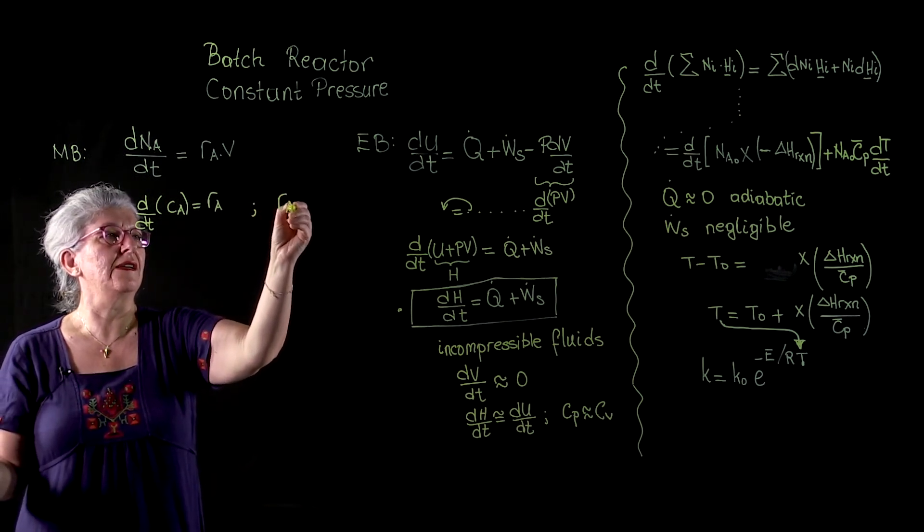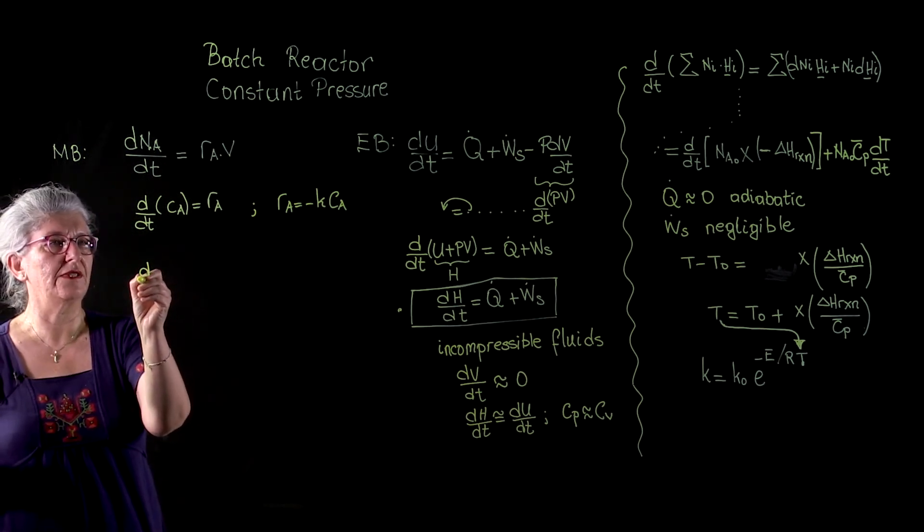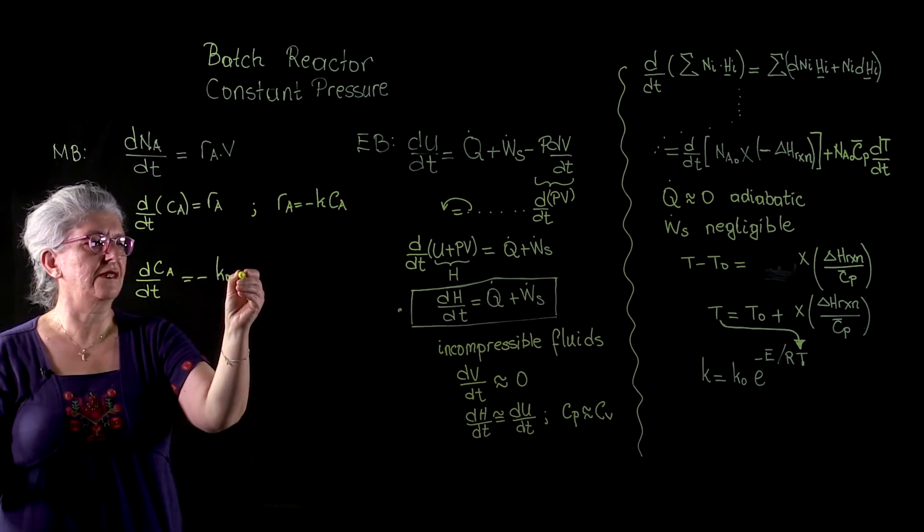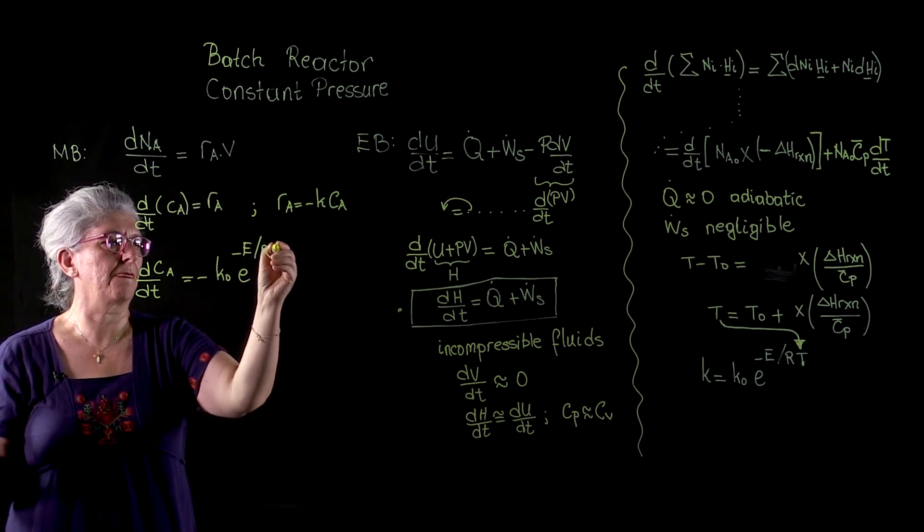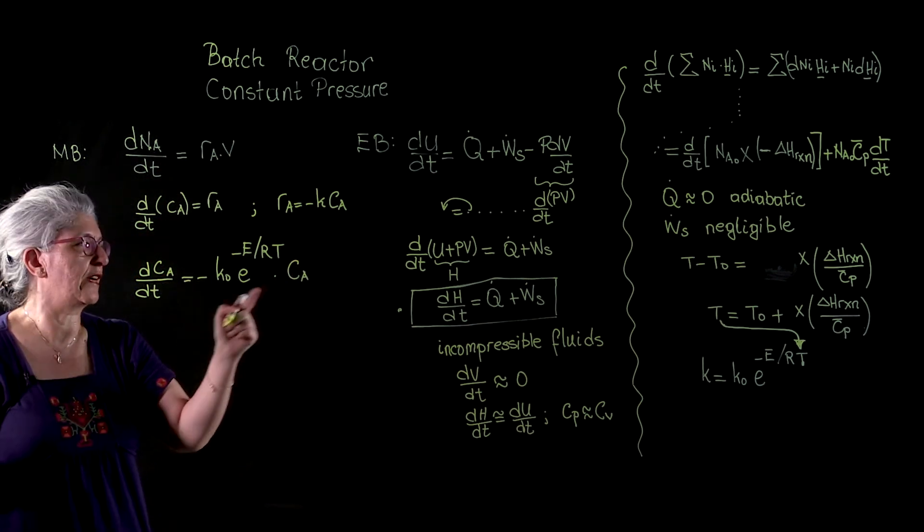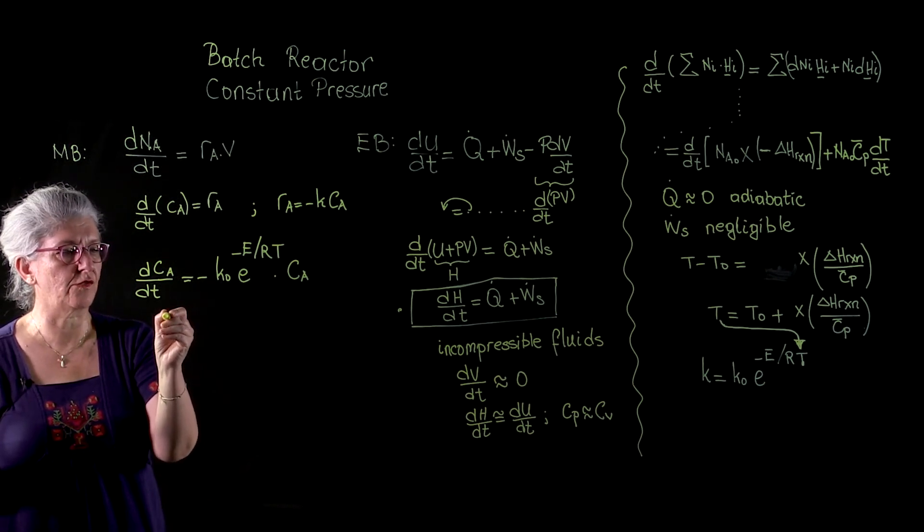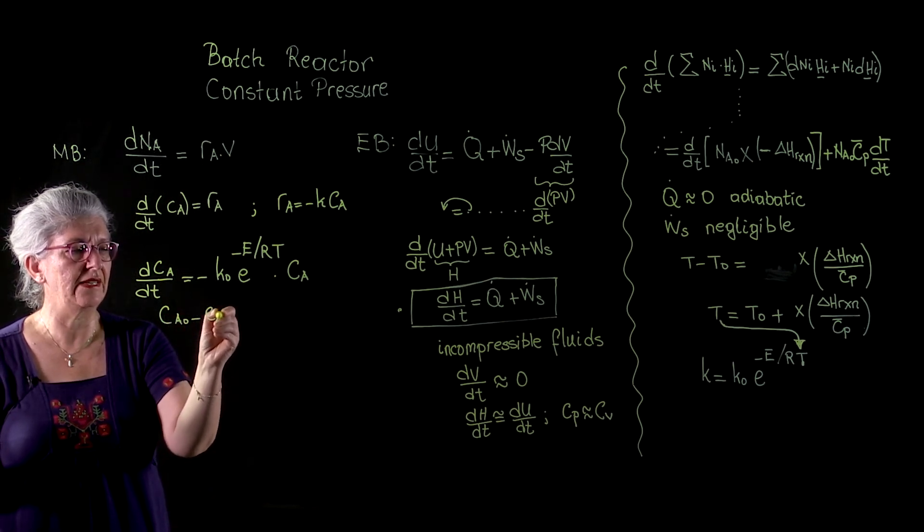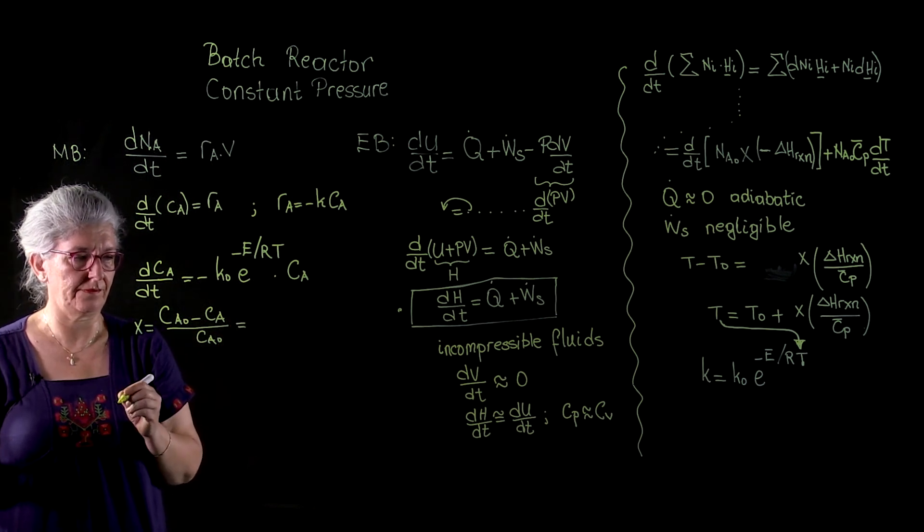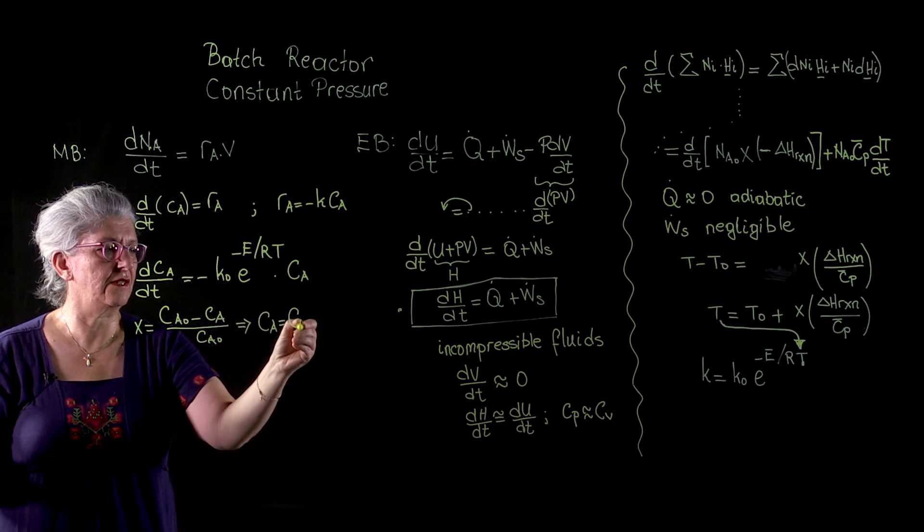And our time progression of this reaction for a batch reactor takes this form. And of course, since our temperature is a function of x, we are going to convert concentration to the equivalent expression in terms of conversion, remembering that CA0 minus CA divided by CA0 was equal to x or CA was equal to CA0 times (1 minus x).